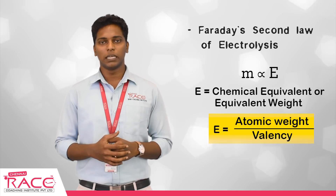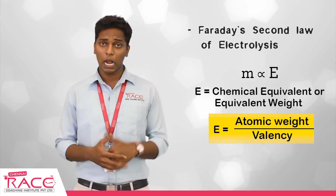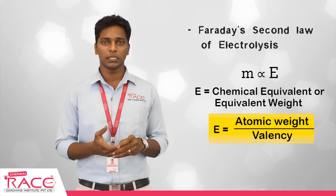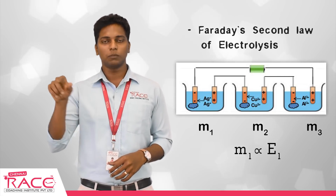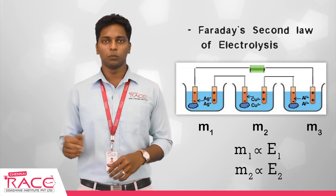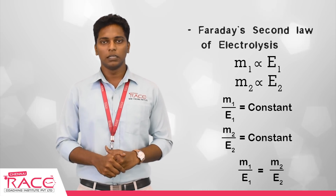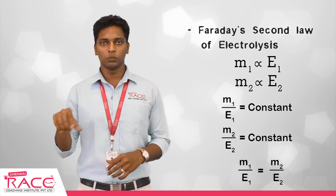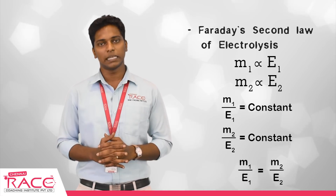So M is proportional to E. For two different solutions, M1 ∝ E1 and M2 ∝ E2. Therefore, M1/E1 = M2/E2. The electrochemical constant Z may vary between substances, but the mass deposited will always be in the same proportion as their chemical equivalents. This is the second law of electrolysis.